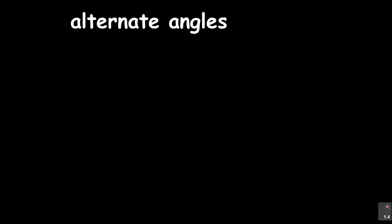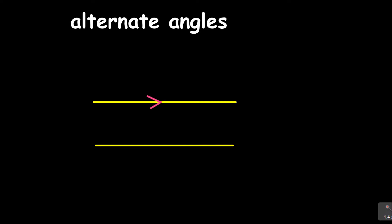Now we are going on to look at alternate angles. And just to bring again the very important concept of parallel lines — if you are given parallel lines, how do you indicate that they are parallel? You need to show those arrows, because it's a sign that shows these are parallel lines. So let's say this is line AB and the other one is line CD. To indicate that they are parallel, you write AB is parallel to CD.